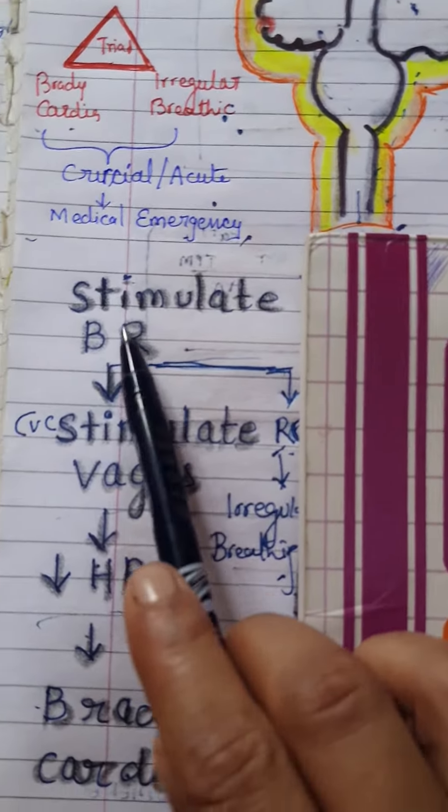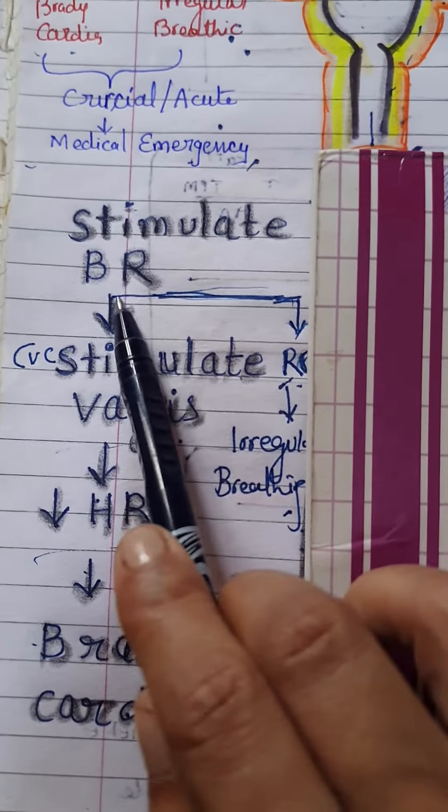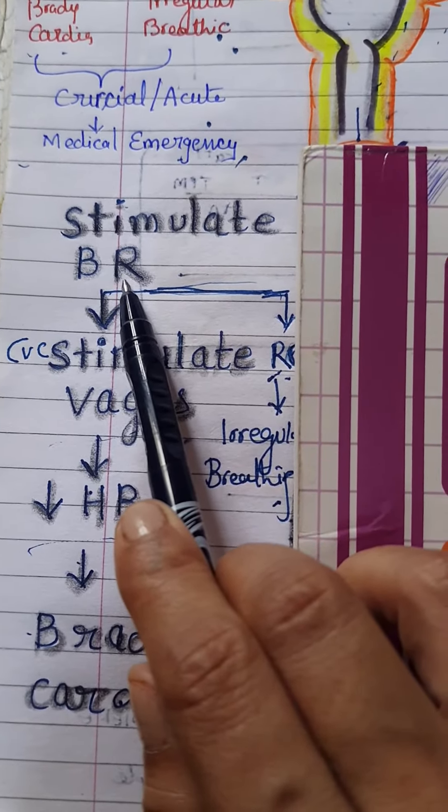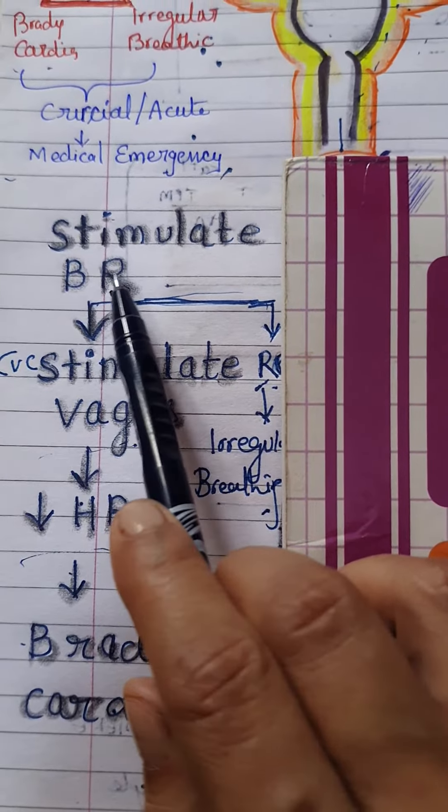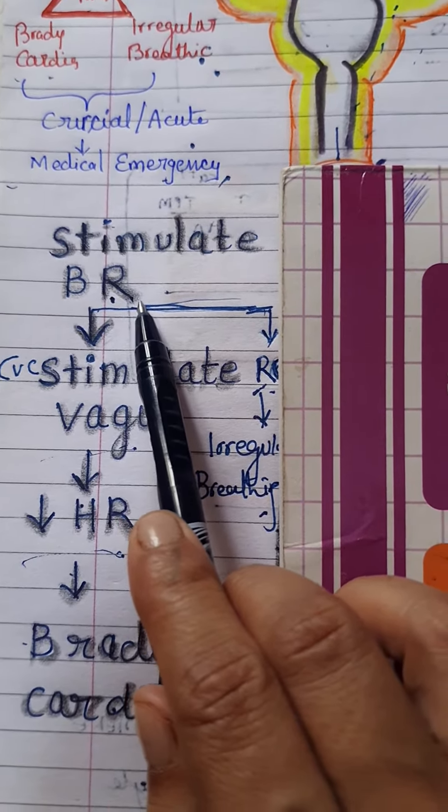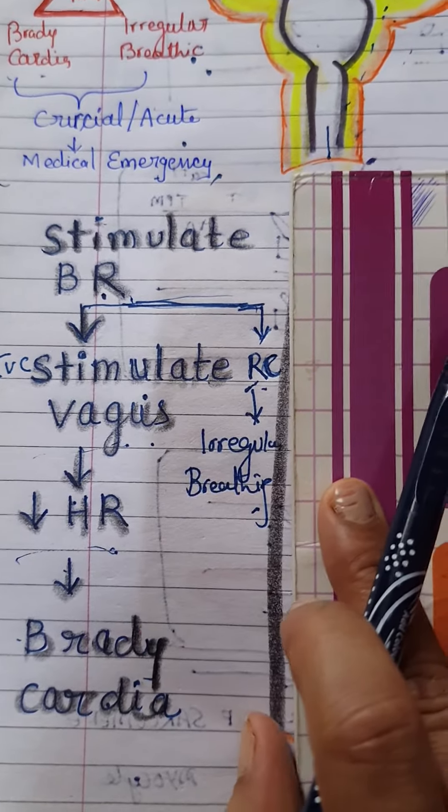In the next phase, because of the hypertension, baroreceptor gets stimulated. And this baroreceptor sends the message to the medulla oblongata. And it reflexly stimulates two centers that are present in the medulla.